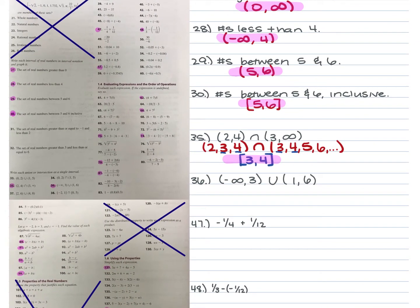For 36, we have the numbers less than 3 with a union of the numbers between 1 and 6. For a union, what's the smallest number? Negative infinity. What's the largest? The 6. Negative infinity automatically gets a parenthesis. What's already on the 6? A parenthesis — so it stays a parenthesis. So the answer is just from negative infinity to 6, written as (-∞, 6).